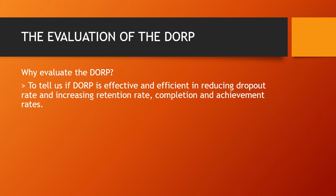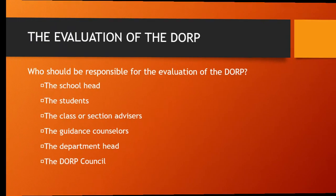Why do we need to evaluate the DORP program? Simply because it tells us if the DORP is effective and efficient in reducing the dropout rate and increasing retention rate, completion, and achievement rates. Who should be responsible for the evaluation of the DORP? The school head, the students, the class or section advisors, the guidance counselors, the department head, and the DORP council are responsible for the evaluation of the DORP program.